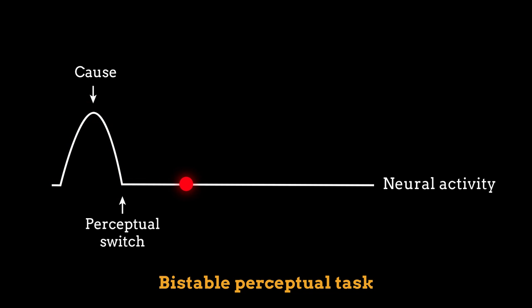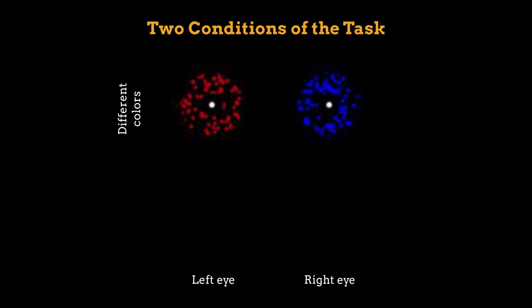The researchers had to design the task so that perceptual switches would occur but would sometimes not be recognized by participants. The task had two conditions: one where the dots presented to each eye were different colors and one where the dot colors were the same.